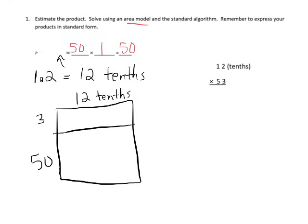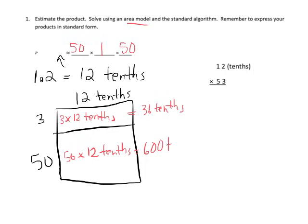All right. So now, our first rectangle is 3 times 12 tenths. And that's 36 tenths. 36 tenths. And then down here, we've got 50 times 12 tenths. And that's going to be 600 tenths.